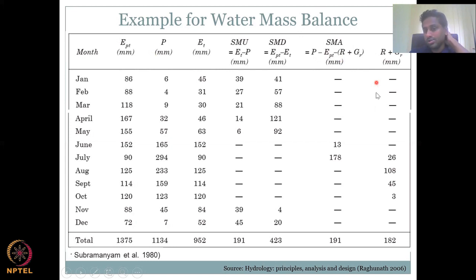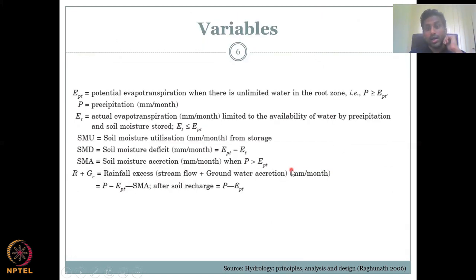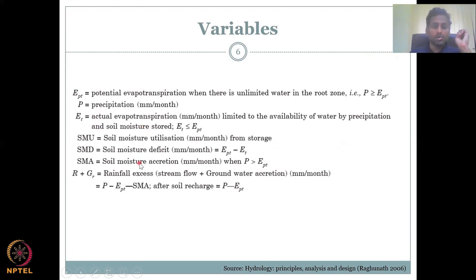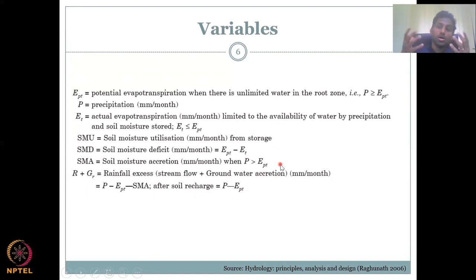All variables — potential evapotranspiration, precipitation, and actual evapotranspiration — are in millimeters per month. Soil moisture utilization SMU occurs when precipitation is lesser than what the plant needs. Soil moisture deficit SMD is when you want to utilize soil moisture but there is none available. Soil moisture recharge is a groundwater recharge component, and R plus GR is the rainfall excess available. When precipitation is greater than EPT, water is in excess — plants can take it and the remainder goes into groundwater.